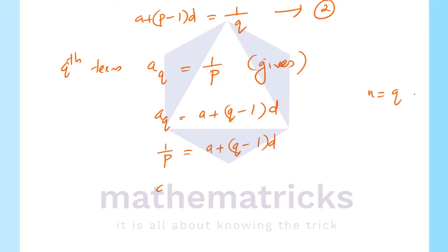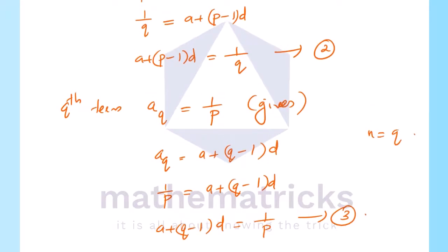This gives us equation number 3. Now we will subtract equation 2 from equation 3 to find the common difference d.